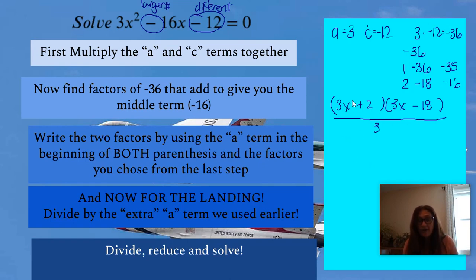So one of these parentheses is going to be divisible by 3, and it's clearly not the first one. So that's one of our factors. And now the second one, both numbers are divisible by 3, so I'm going to go ahead and divide that.